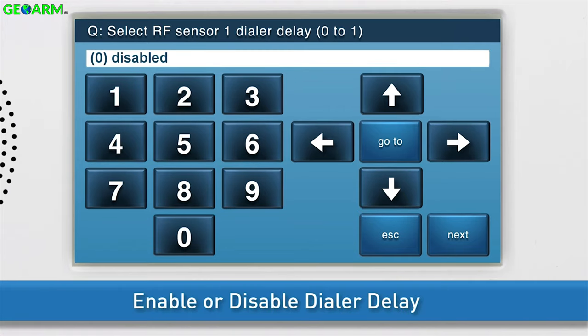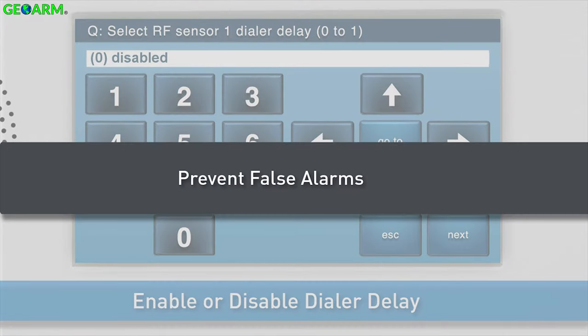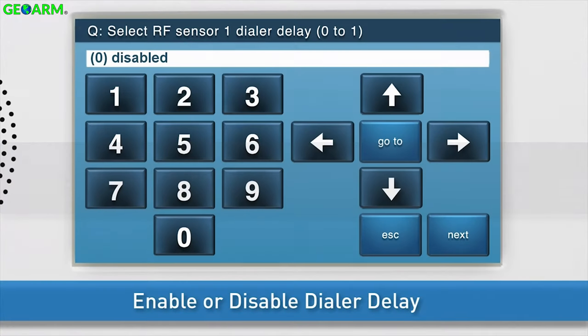Choose whether to enable or disable the dialer delay. The dialer delay is used to help prevent false alarms. To enable the dialer delay, use the right arrow to select option 1. To disable the dialer delay, leave option 0 disabled. Once the desired option displays in the answer box, press the down arrow to go to the next sub-question.